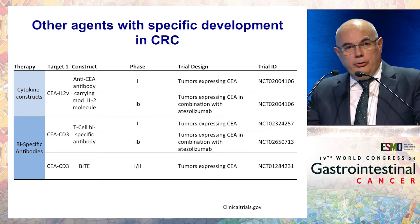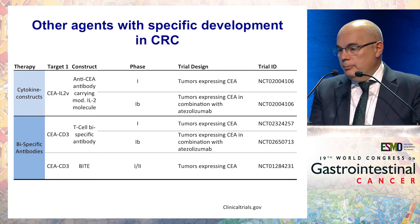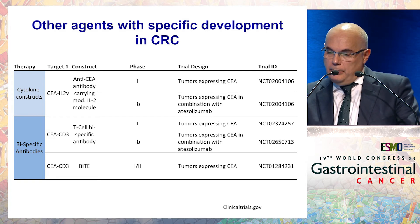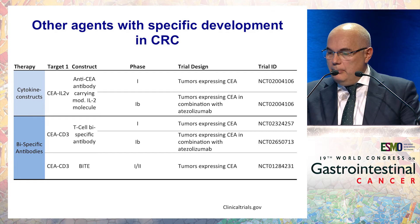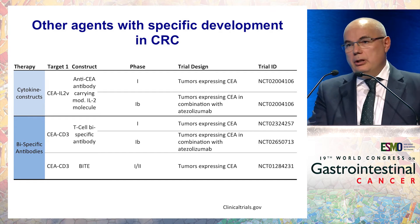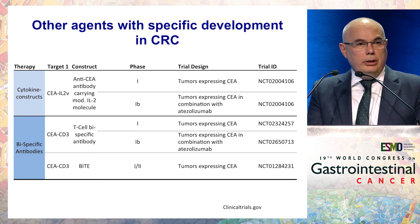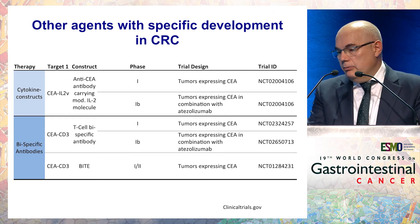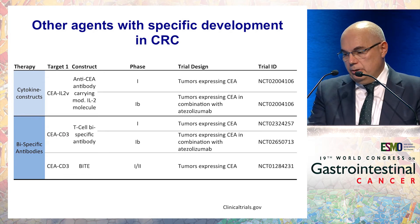What about other potential mechanisms to engage the immune cycle in this immune desert population? A group of compounds is being developed here. One includes cytokine constructs directed to CEA, and also very interesting data with bispecific antibodies that bind simultaneously to CD3 on T cells and to a receptor on the malignant cell such as CEA. We also have similar T cell bispecific antibodies and BiTEs that target two receptors.